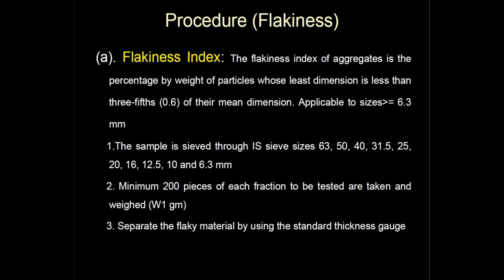First we find the flakiness index. The flakiness index of the aggregate is the percentage by weight of particles whose smallest dimension is less than three-fifths, meaning 0.6, of their mean dimension. The test is not applicable to sizes smaller than 6.3 mm.